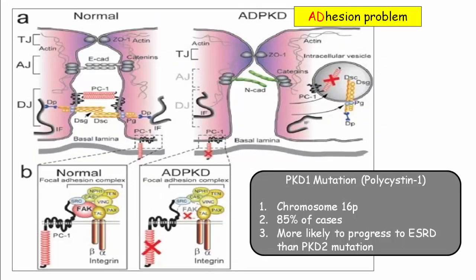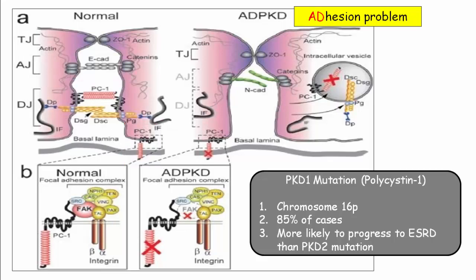This slide highlights autosomal dominant PKD as an adhesion defect with abnormalities of cell-to-cell and cell-to-matrix interactions. On the left you can see a normal polycystin protein spanning two epithelial cells and connecting them to the underlying matrix. On the right, abnormalities are noted with loss of connectivity. How this actually translates into cyst development is unknown.